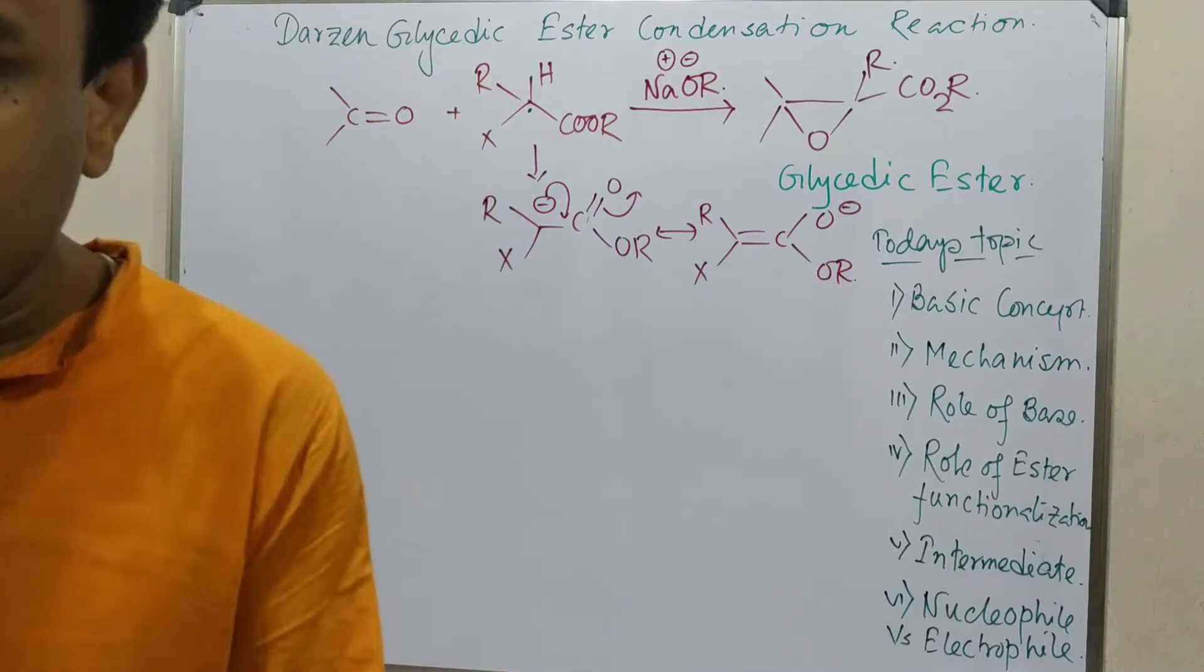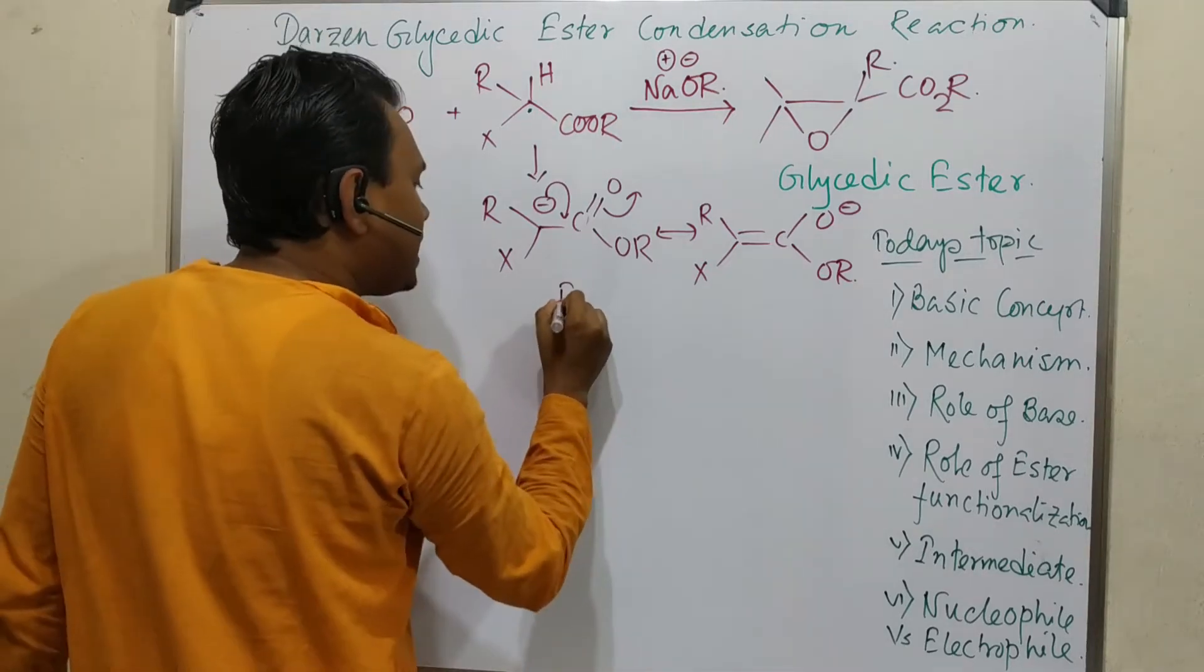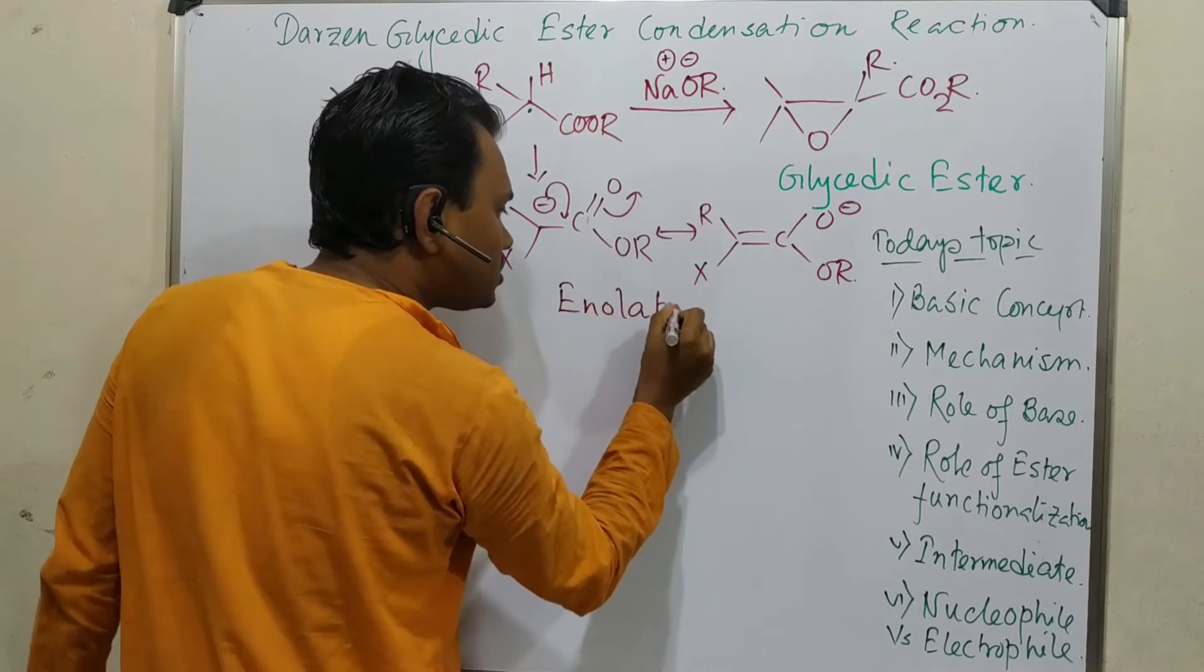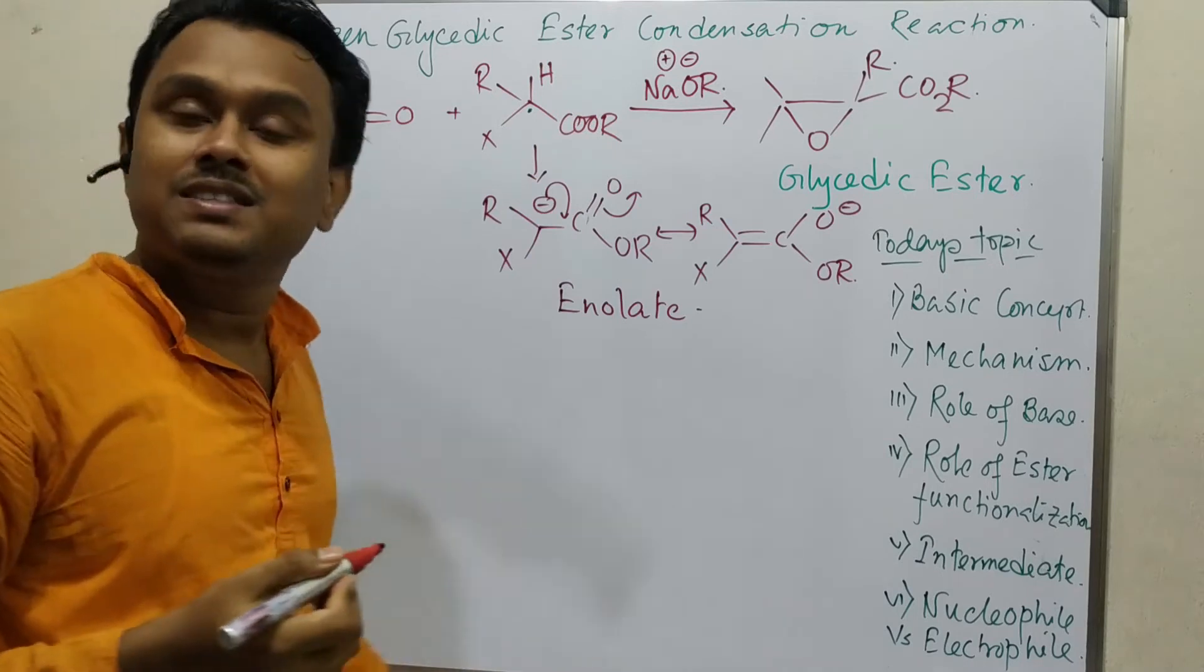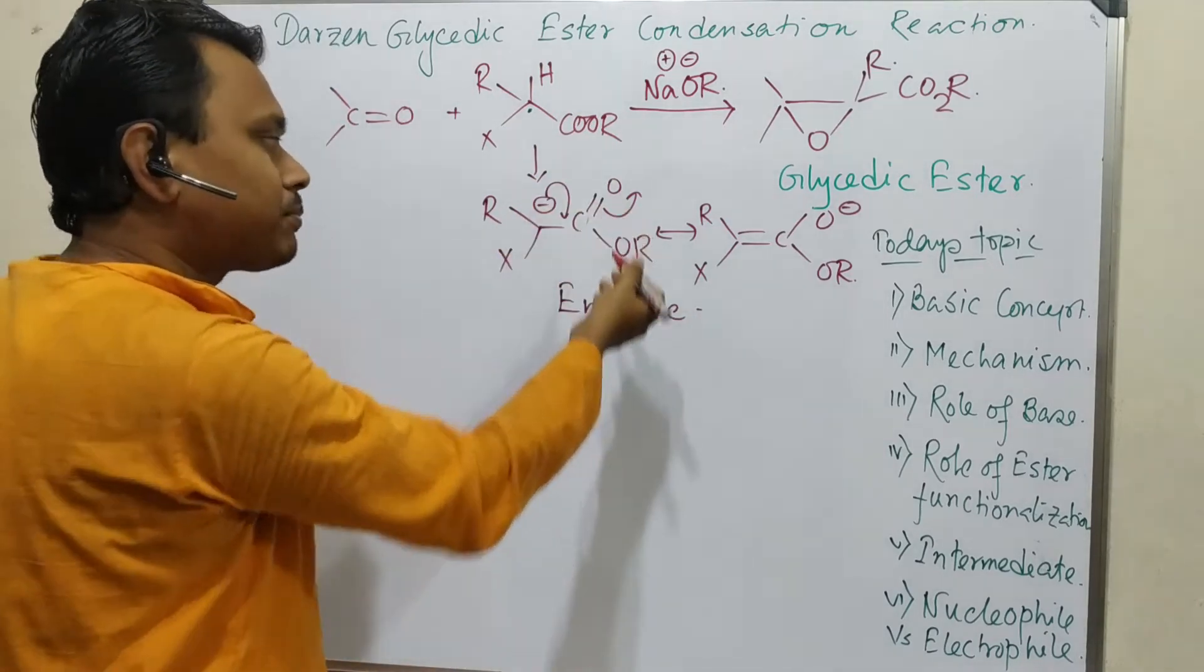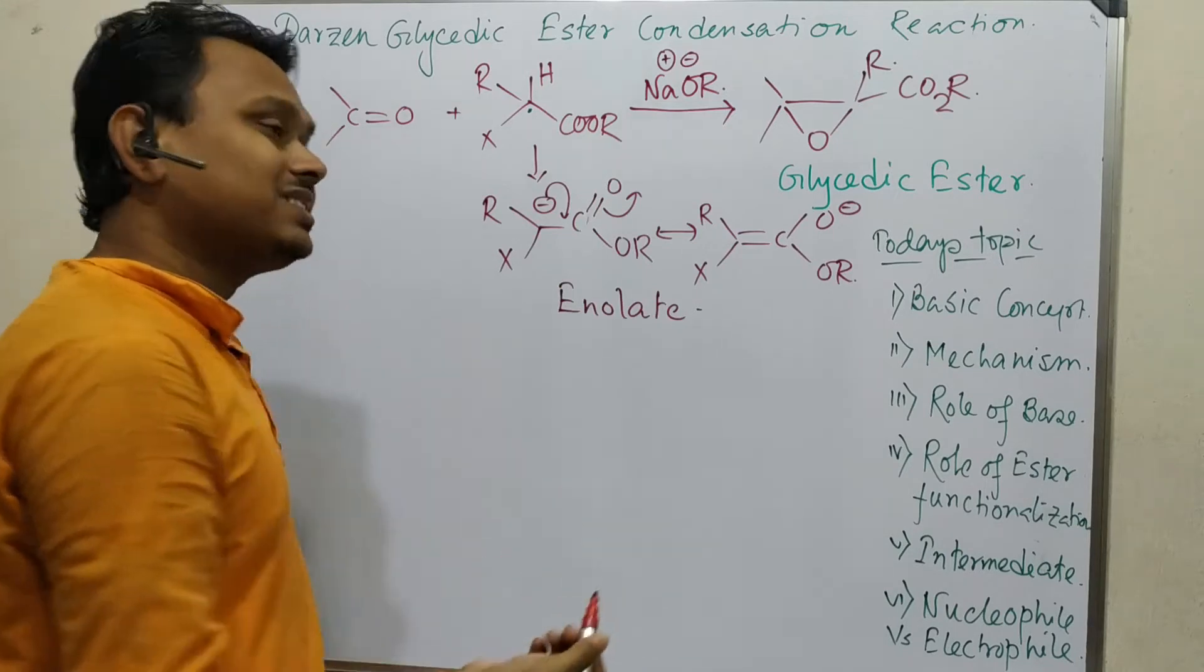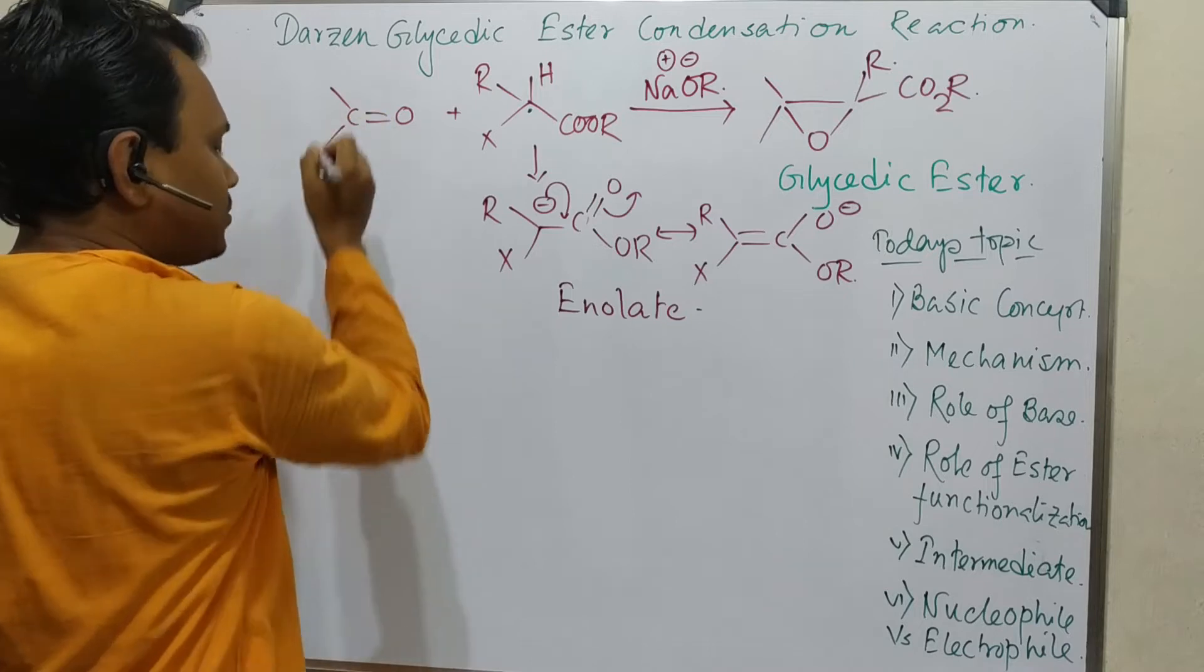In this way, the intermediate enolate is resonance-stabilized. Enolate from ester - in case of Claisen, similar type of mechanism happens, similar product formation, abstraction happens, and after that it attacks this carbonyl carbon.